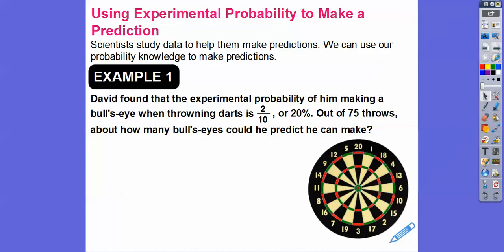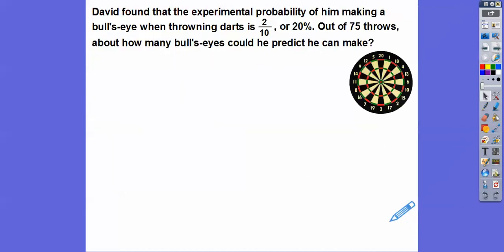So David found that the experimental probability of him throwing a bullseye when throwing darts is 2 out of 10, or 2 tenths, or 20%. So out of 75 throws, about how many bullseyes could he predict that he might make? Now there's a couple of ways to do this.